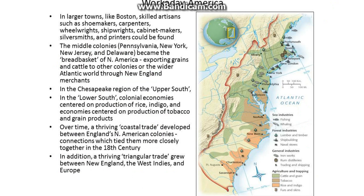In larger towns like Boston, skilled artisans such as shoemakers, carpenters, wheelwrights, shipwrights, cabinet makers, silversmiths, and printers could be found. The middle colonies — Pennsylvania, New York, New Jersey, and Delaware — became what's called the bread basket of the North American colonies, exporting grains and cattle to other colonies or the wider Atlantic world through the New England merchants.